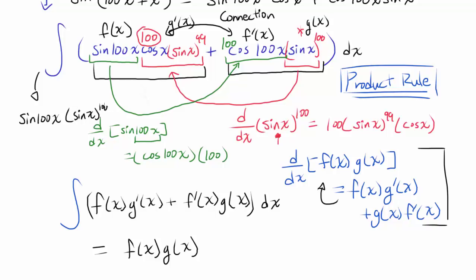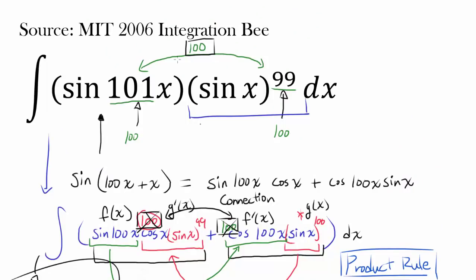We need to get rid of the factor of 100 — since both derivatives introduced a factor of 100, we divide by 100. So the solution to our question is: the integral of sine of 101x times sine of x to the 99th power equals 1 over 100 times sine of 100x times sine of x to the 100th power, plus a constant of integration.